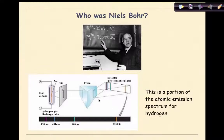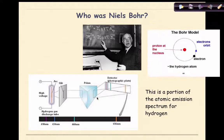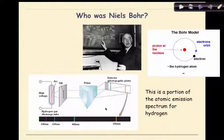Like Rutherford, Bohr also proposed a planetary model of the hydrogen atom. There is a positively charged nucleus with mass. However, the Bohr model focused on the behavior of electrons to explain the line spectrum phenomena.